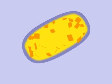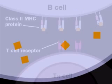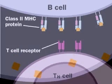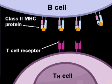The B cell processes the antigen and class II MHC proteins transport the pieces for display on the B cell surface. Thus, the B cell becomes an antigen-presenting cell.